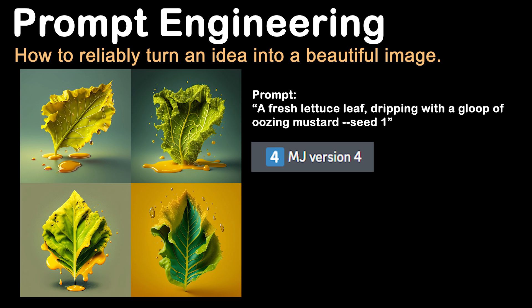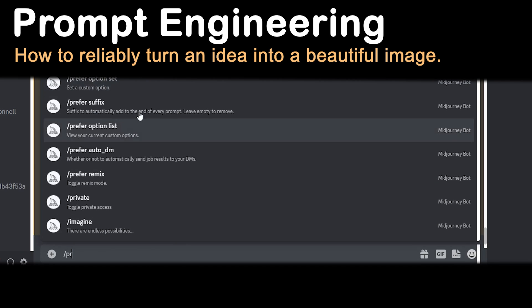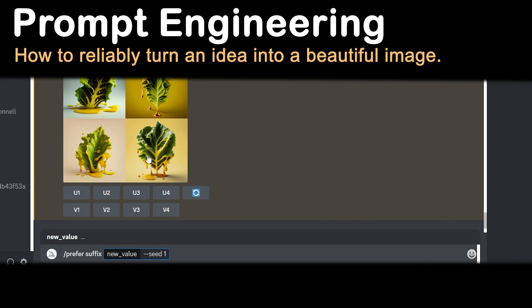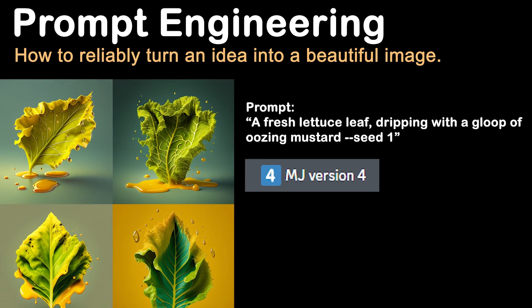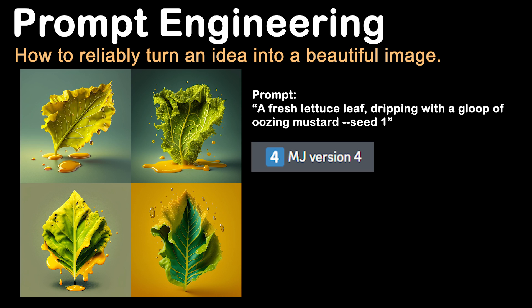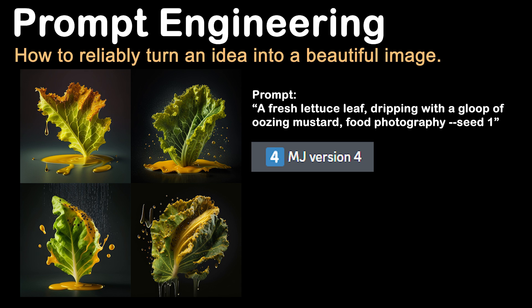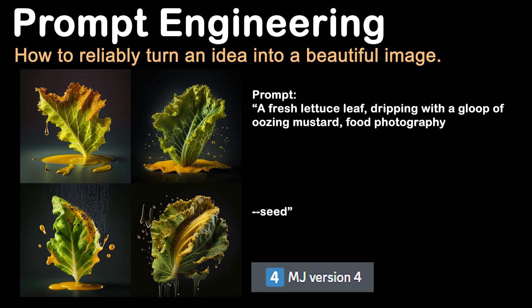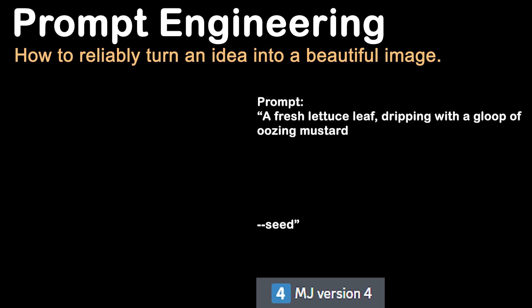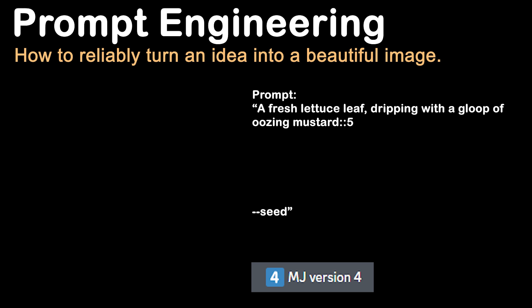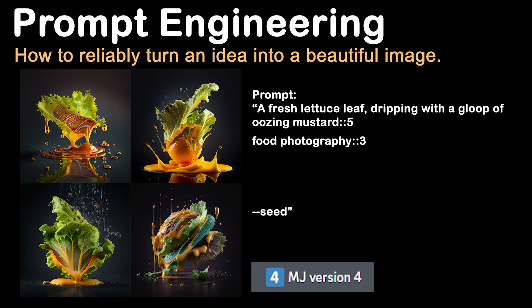The seed is still set to 1, so if you want to try anything I'm doing, type slash prefer suffix --seed 1 and you will get the same results. You can take that prompt — a fresh lettuce leaf dripping with a gloop of oozing mustard — and add some style direction: food photography. Suddenly it looks way better; the lettuce pops and the mustard has a nice shine. But I feel like I've lost that oozy feel. Let's switch to a multi-prompt format and use weights so the style doesn't change the idea quite so much. Fresh lettuce leaf dripping with a gloop of oozing mustard, multi-prompt breakpoint, weight 5, then food photography at weight 3. Now that is gloopy!